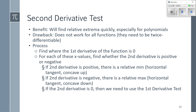The second derivative test is our third way of finding extreme values. The candidates test takes advantage of the extreme value theorem to find absolute maximum and absolute minimum, but not relative extrema. The first derivative test finds every relative extrema for any function, but requires a lot of work. The second derivative test will find relative extrema and it's pretty quick, especially for polynomials.